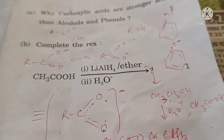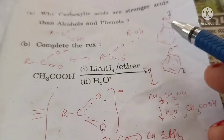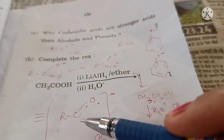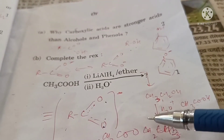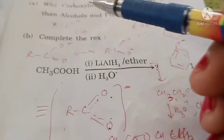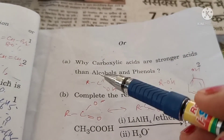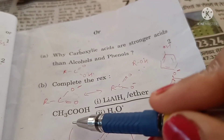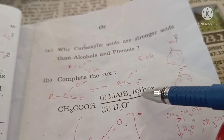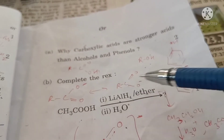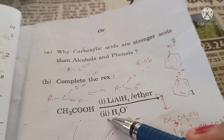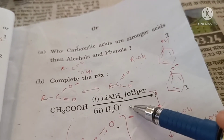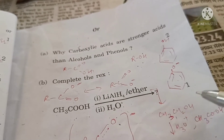In alcohols there is no resonance; in phenol there is only one oxygen to support the negative charge, whereas in carboxylate ions there are two oxygens — these are the reasons why carboxylic acids are stronger acids. Complete the reaction: ethanoic acid when reacted with lithium aluminium hydride in presence of ether gets reduced to an alcohol.